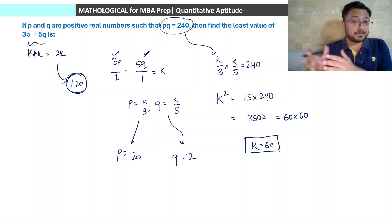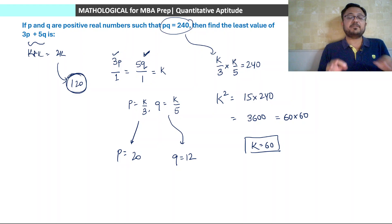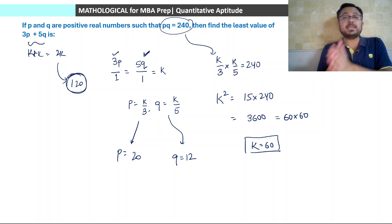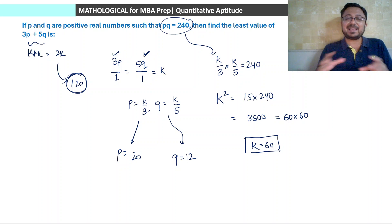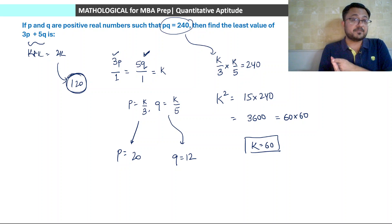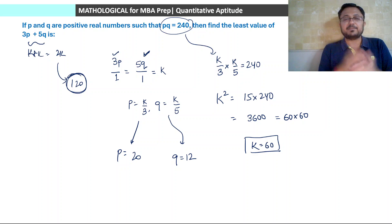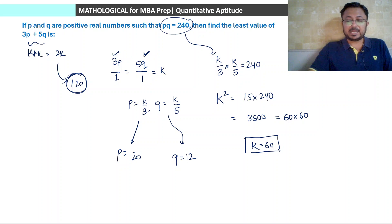Note that the question language may vary slightly. It might ask: if 3p plus 5q is minimum, find the value of p or q. The approach remains the same. You can also use AM-GM directly: 3p plus 5q by 2 is greater than or equal to square root of 15pq. Substituting pq equals 240 gives the same answer, though the shortcut method is more efficient for complex powers.